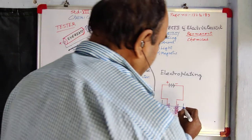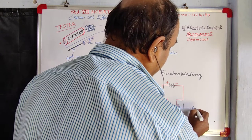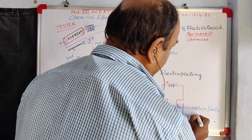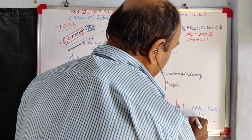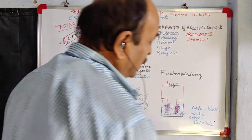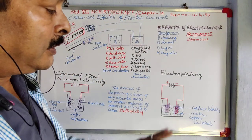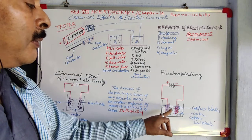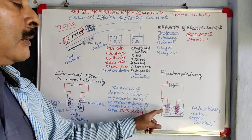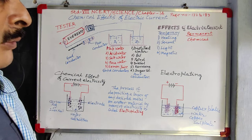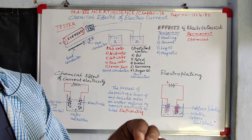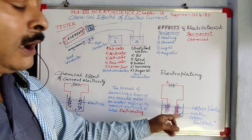How is electroplating done? Here two copper plates are taken. The solution is water plus copper sulphate — a copper sulphate solution. Two copper plates are connected with a battery, one to the positive end and another to the negative end. What we can observe is that the positive end copper plate becomes thinner and thinner — it is losing copper.